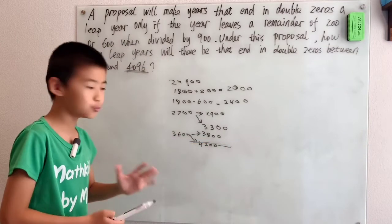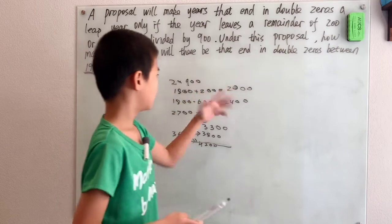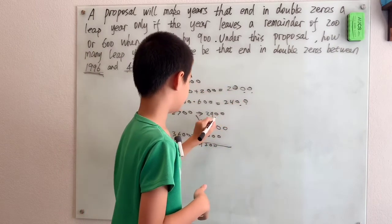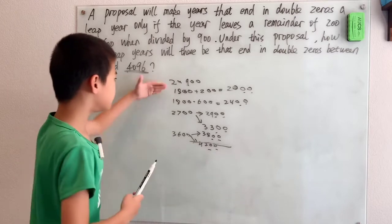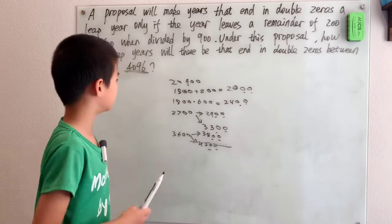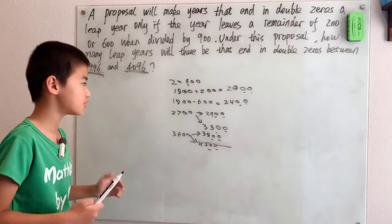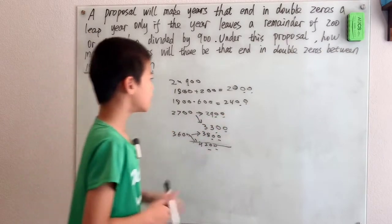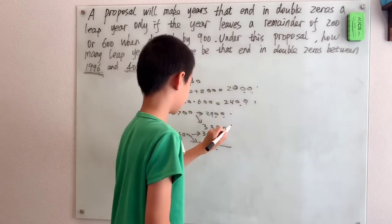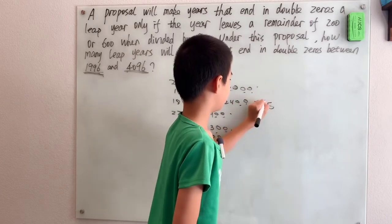We can be sure that we didn't count anything more because they all end in double zeros, none of them are repeated, and we got every single one because we went through every single multiple of 900 and checked both cases, 200 plus and 600 added on. So we can be sure that our answer is 1, 2, 3, 4, and 5.